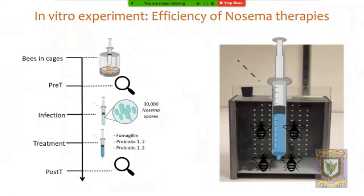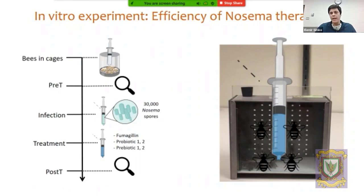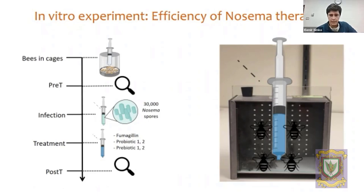I'll talk about two experiments performed here at the University of Saskatchewan, both addressing nosema issues. In this first one, we were interested in testing how efficient different therapies are. As Dr. Klein mentioned, the only recommended treatment for nosema is fumagillin, but this is an antibiotic that can produce residues in hive products like honey and pollen, so beekeepers are interested in finding alternative ways to control nosema.